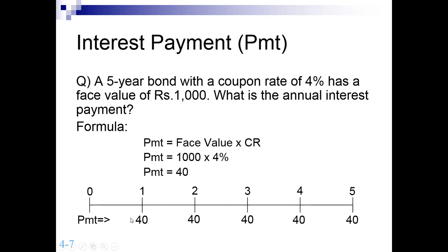This interest payment of 40 is received by the investor from the company for five years because the bond has a maturity of five years. If maturity were three years, it would end at year three; if ten years, it would continue for ten years. At the end of the maturity period, you also get back your own invested amount — the face value. Even if you bought the bond from the market at 900, 1,150, or 850, irrespective of whatever price you paid to hold the bond, at maturity the company is committed to pay back the face value.